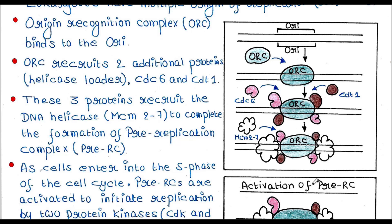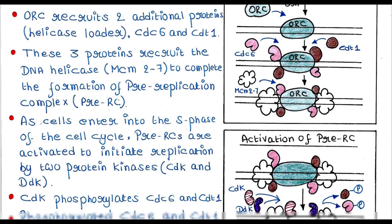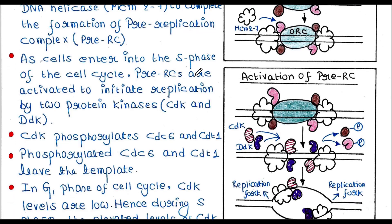Until now, the cell was in the G1 phase of the cell cycle. Now cell enters S phase. As cells enter into the S phase of the cell cycle, pre-RCs are activated to initiate replication by two protein kinases, CDK and DDK.